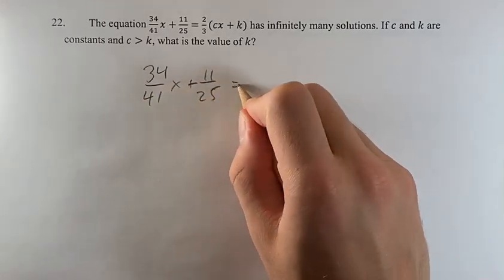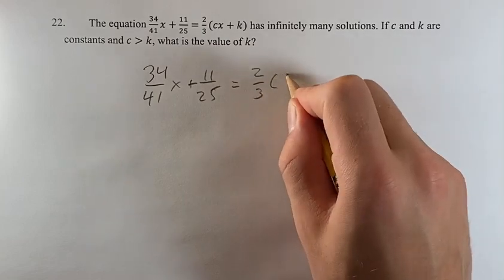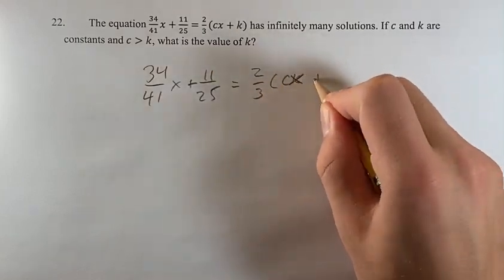That means for whatever values of c and k, which are our unknowns right now, this equation is always going to be true.